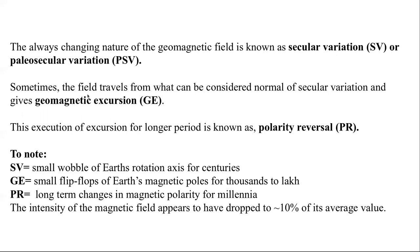Related to polarity reversal is the concept of geomagnetic excursion. Secular variation is always roughly parallel to Earth's magnetic field with some variations. In a geomagnetic excursion, there is a complete flip-flop in Earth's magnetic poles — the north magnetic pole becomes south and vice versa. Geomagnetic excursion typically lasts from some centuries to hundreds of thousands of years. If it extends further, it is considered a polarity reversal.